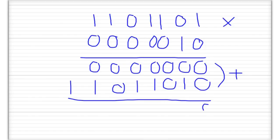So: 0 plus 0 is 0, 0 plus 1 is 1, 0 plus 0 is 0, 0 plus 1 is 1, 0 plus 0 is 0, 0 plus 1 is 1, and then we have a 1. So the answer is 1, 1, 0, 1, 1, 0, 1, 0, 1, 0.